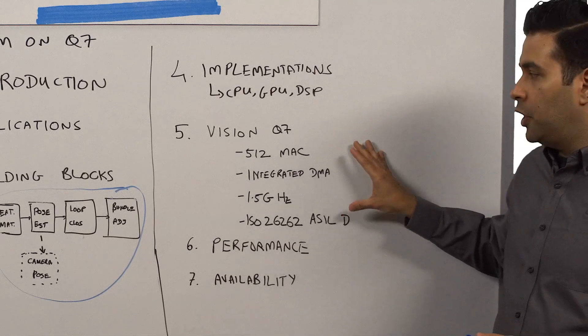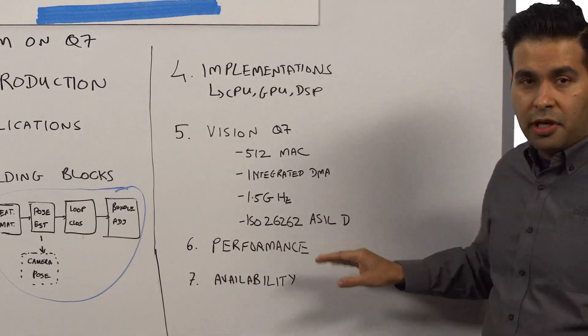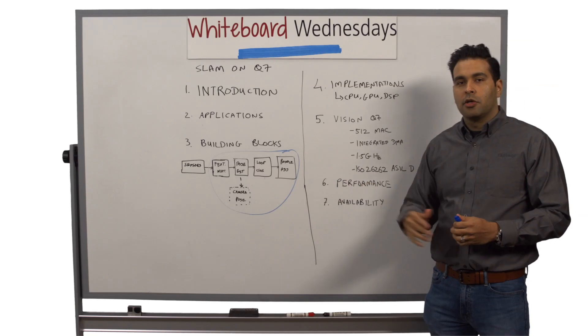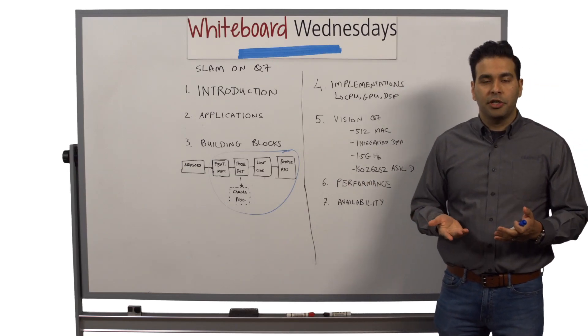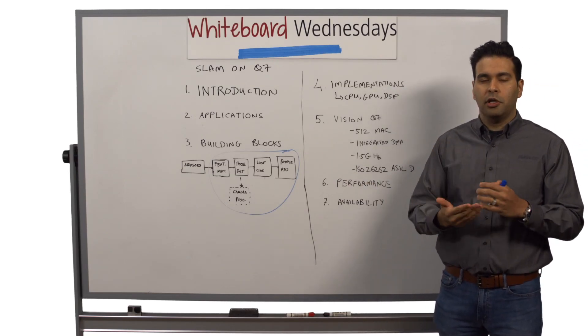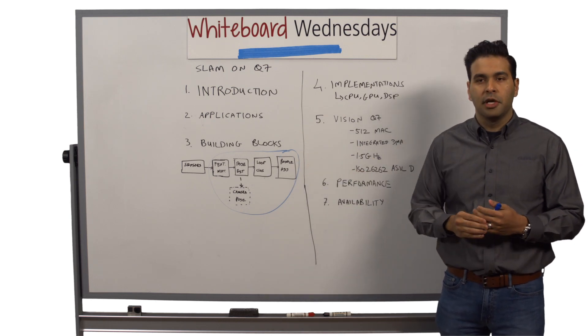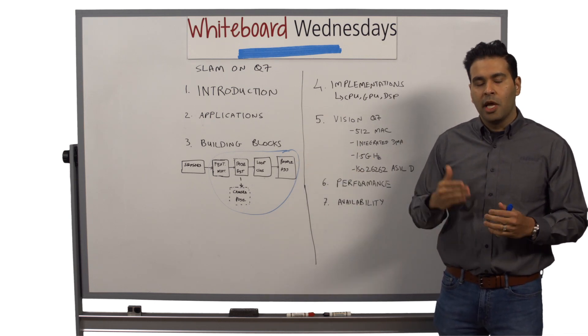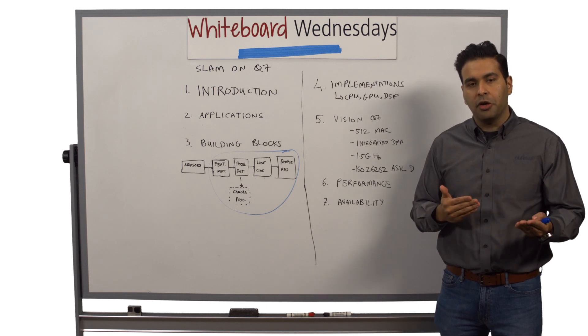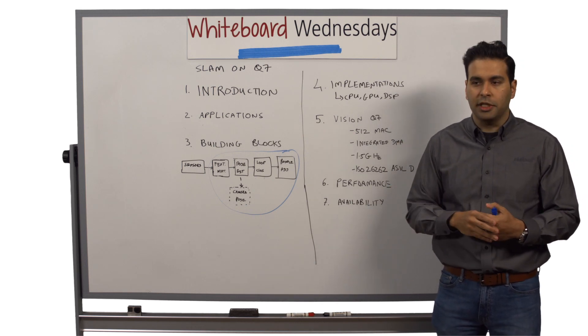Now that I've given you a high level about the Q7, let's talk a little bit about performance on SLAM. So, we did an in-house implementation of SLAM. We took a look at the various building blocks that I've shown over here, as well as the kernels that are used in implementing SLAM. We profiled the kernels running on the Q7, as well as its predecessor, the Vision Q6.